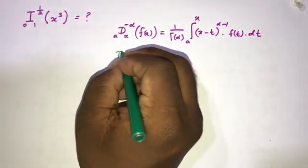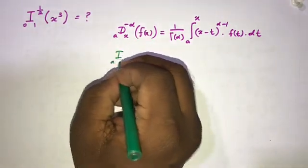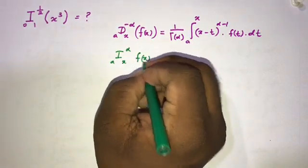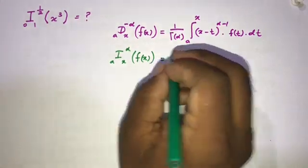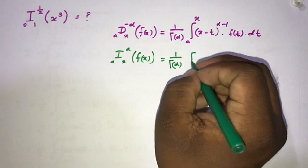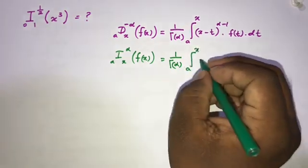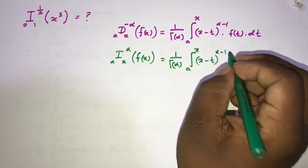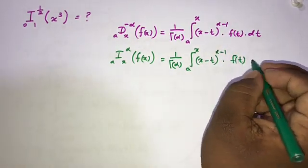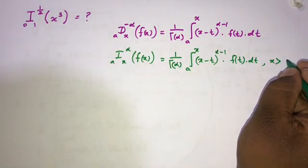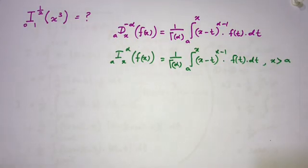Sometimes we use another notation for this general formula. We can write I from a to x superscript alpha of f of x, and this equals 1 over gamma of alpha times the integral from a to x of (x minus t) to the power (alpha minus 1) times f of t dt. This is valid for x greater than a.